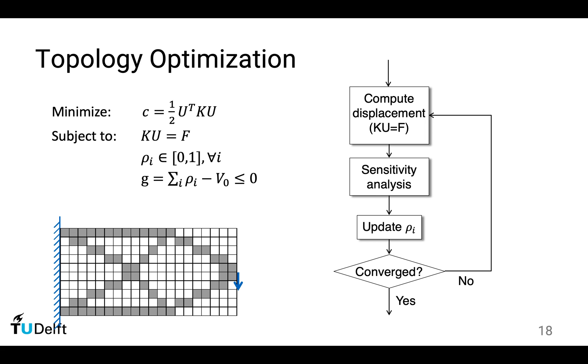This problem is typically solved iteratively. We start from computing the displacement. F is the external force. We assume the force is given. You design a chair, you know how much force is going to be applied. We assume this force is constant. k indicates the stiffness matrix, which is related to the structure and the material distribution.